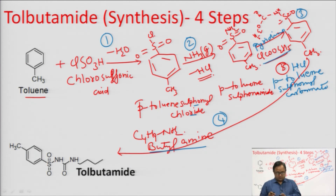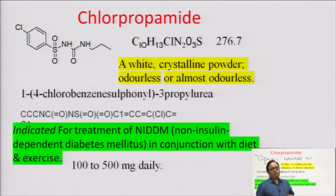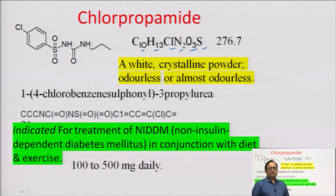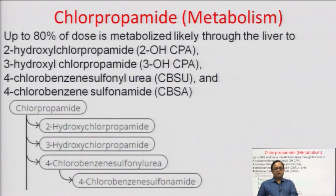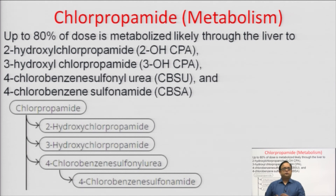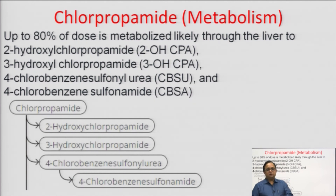The next molecule is chlorpropamide. Its formula is C₁₀H₁₃ClN₂O₃S, appearing as a white crystalline powder, odorless or almost odorless. It is indicated for treatment of NIDDM in conjunction with diet and exercise. Its daily dose is 100 to 500 mg. The drug is 80 percent metabolized in the liver, producing metabolites: 2-hydroxychloropropamide, 3-hydroxychloropropamide, 4-chlorobenzenesulfonylurea, and 4-chlorobenzenesulfonamide.